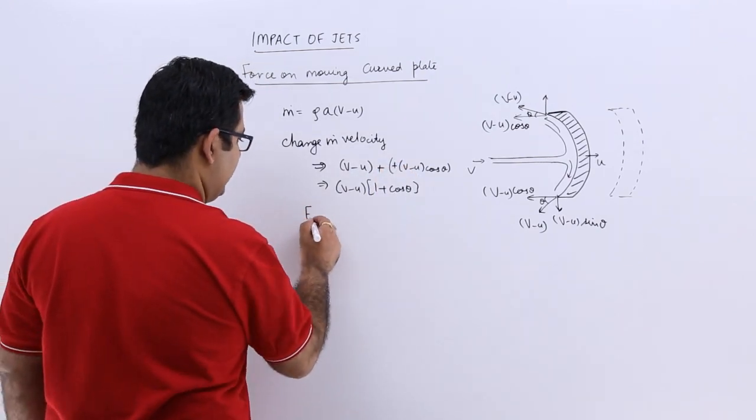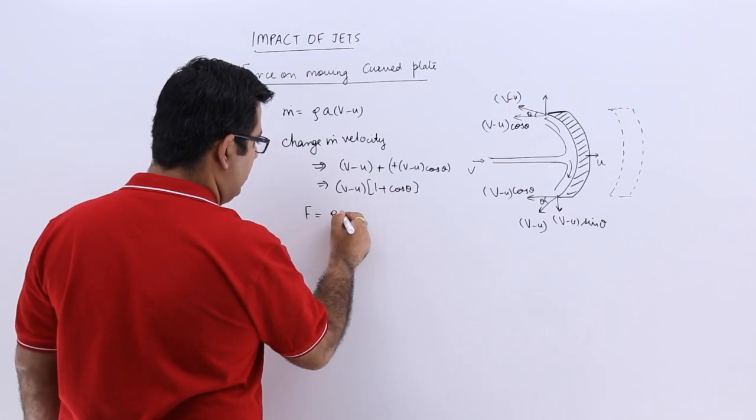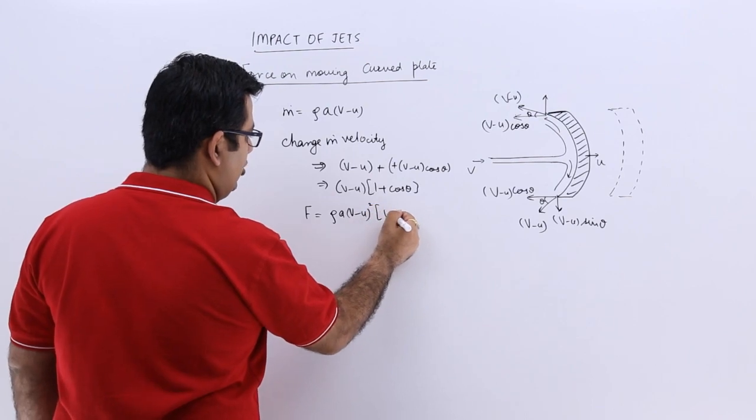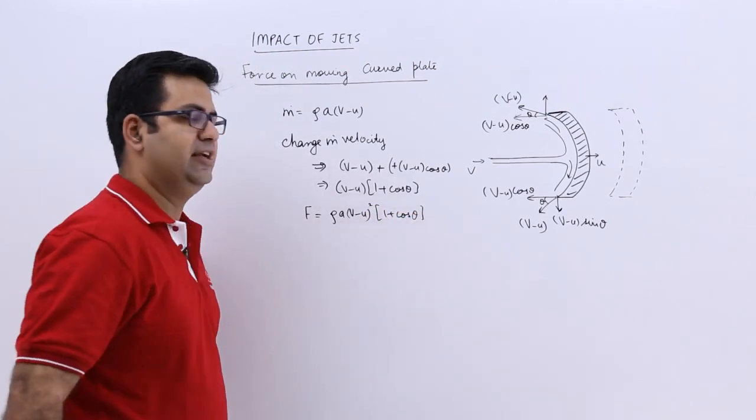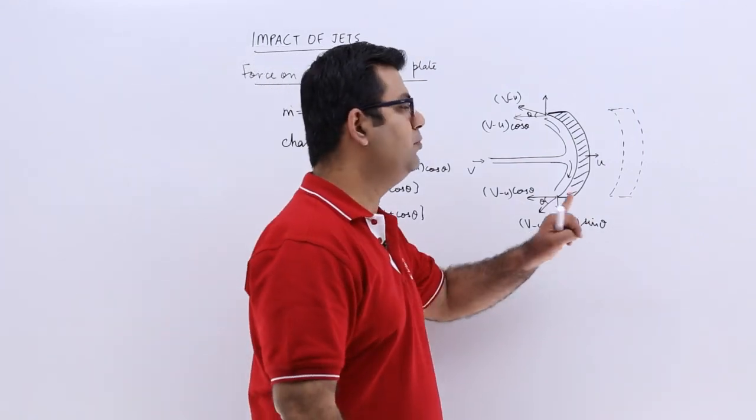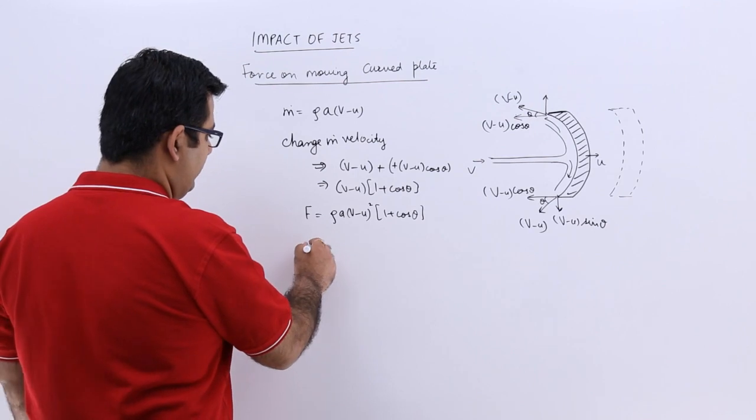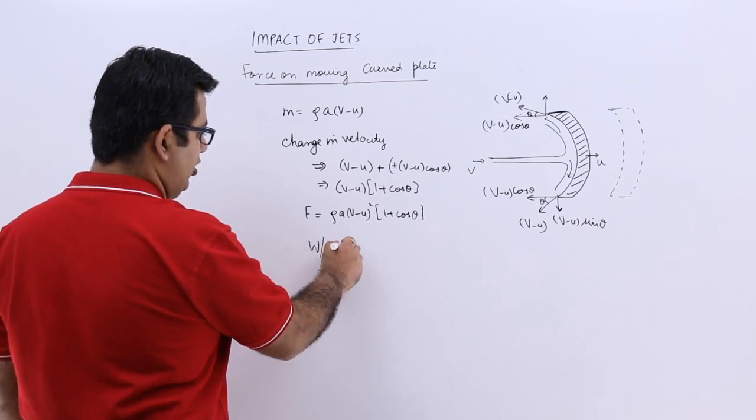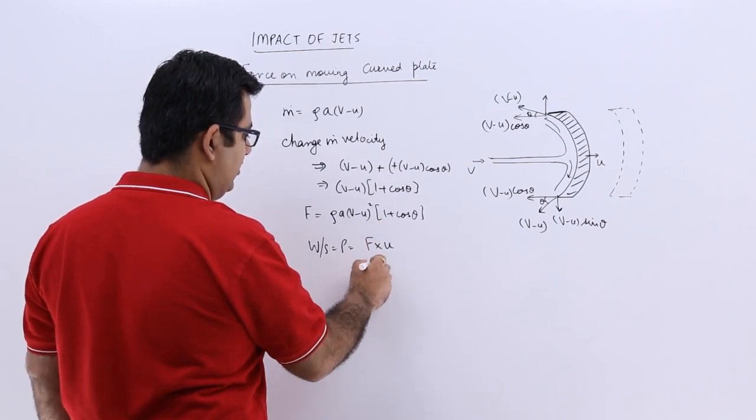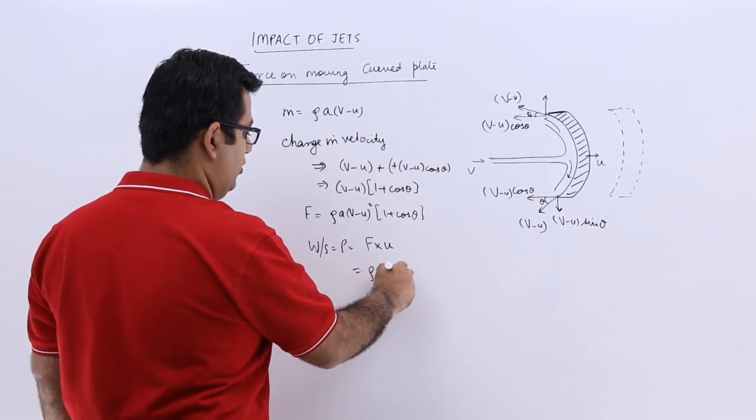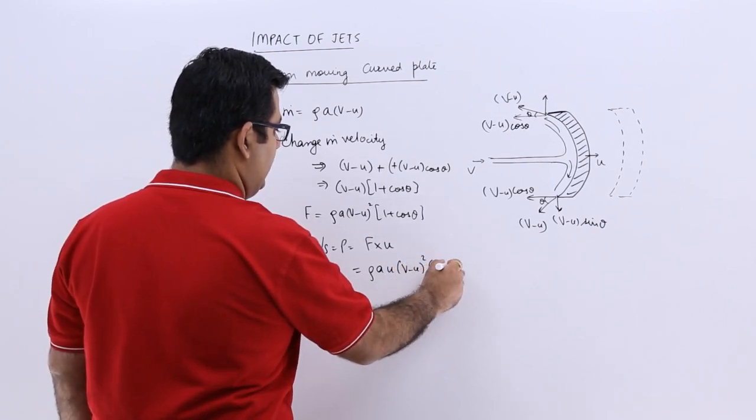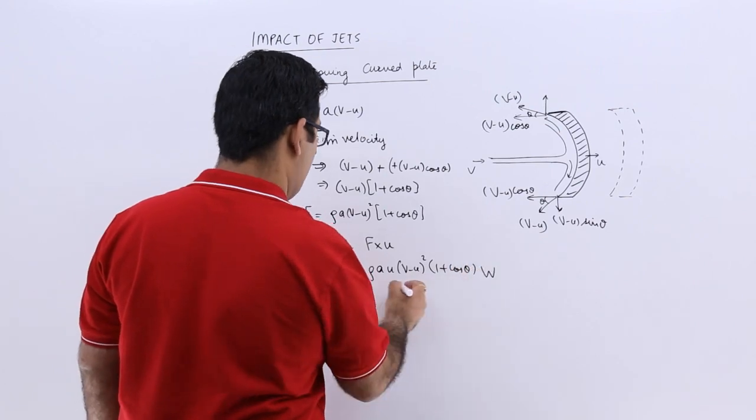So the force which is exerted by the jet onto the moving curved plate. So if I talk about the work done per second or the power, this would be force into the velocity of the plate. You will have rho a u v minus u whole square into 1 plus cos theta watts.